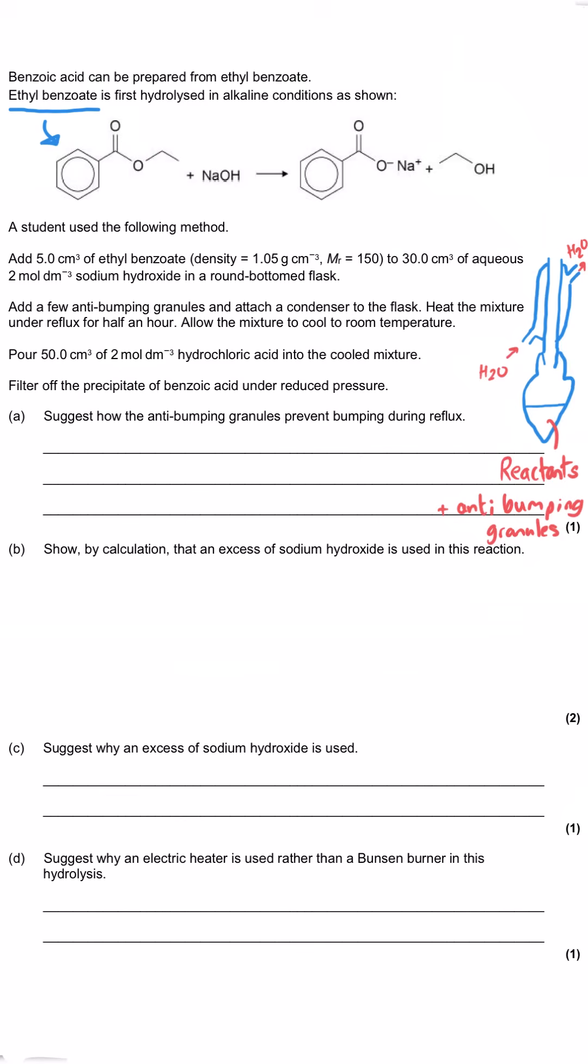The first question asks us why the anti-bumping granules prevent bumping during the reflux process. The answer is it simply allows smaller bubbles to form and prevents the formation of large bubbles by providing a large surface area for the bubbles to collect on as opposed to lots of gas forming at a very small point.